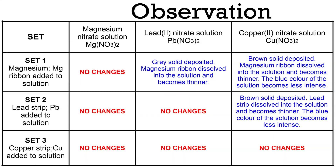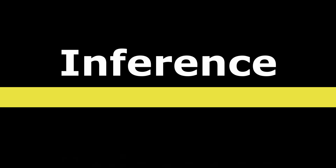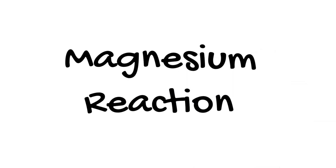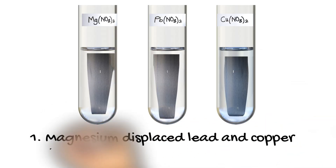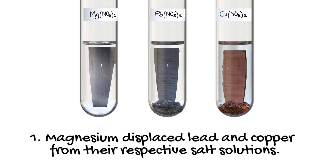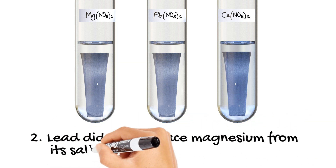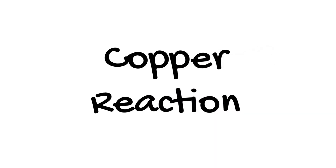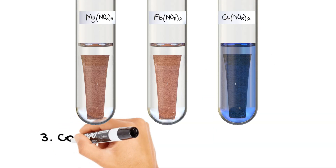Build a table to record all observations from the experiment. For the magnesium reaction: magnesium has displaced lead and copper from their respective salt solutions, based on the residue seen in the test tubes. For the lead reaction: lead has only displaced copper from its salt solution. For the copper reaction: copper did not displace any metal.